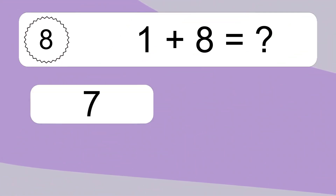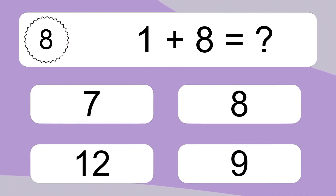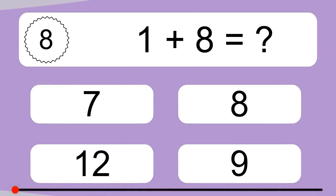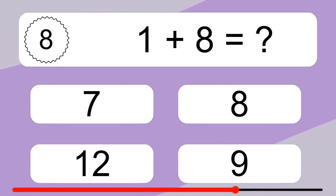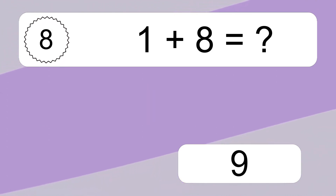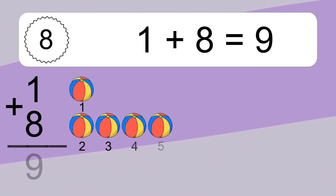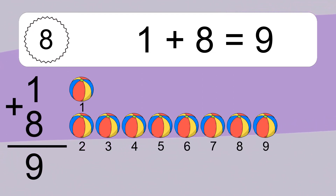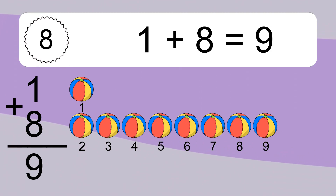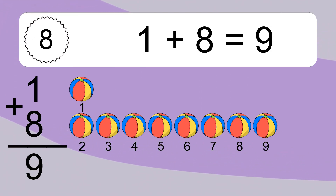1 plus 8 equals what? 1 plus 8 equals 9. Let's count it. 1, 2, 3, 4, 5, 6, 7, 8, 9.